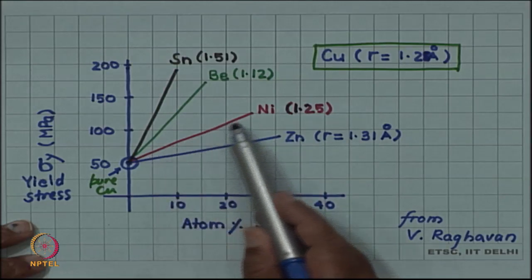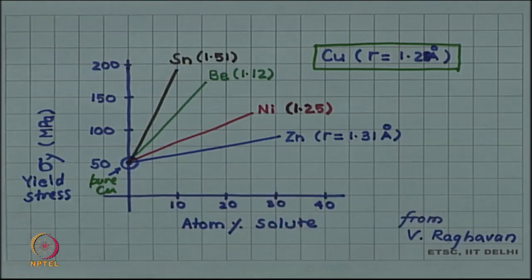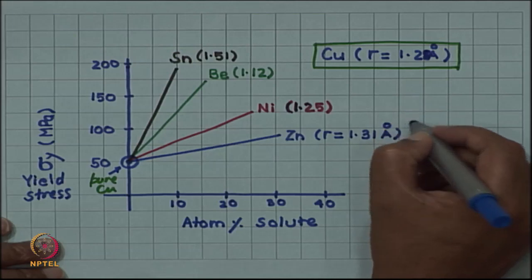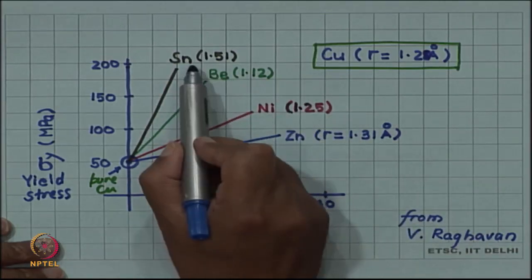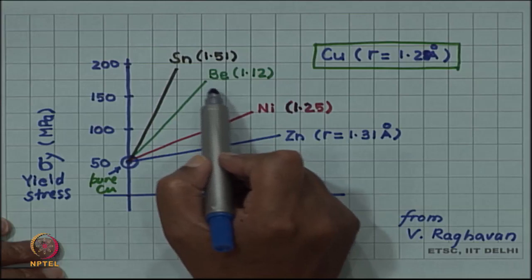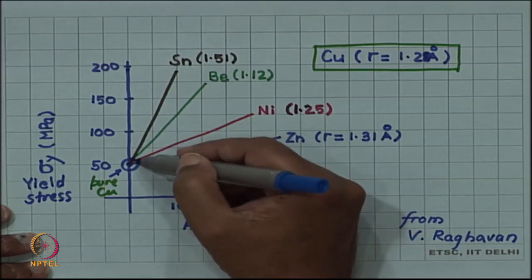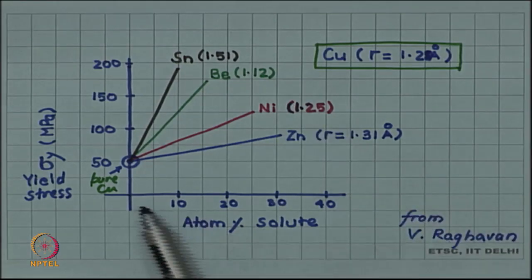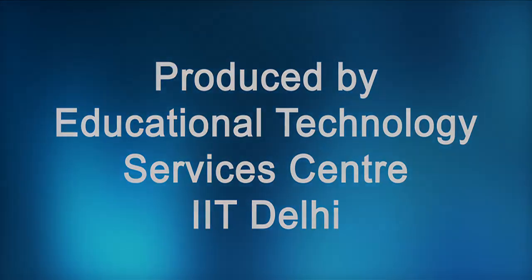With increasing amount of solute, strength increases for whatever solute is added. However, if the radius difference is small, the effect is small and the slope is small. Whereas if the radius difference is large, as in the case of tin and beryllium relative to copper, then for a small amount of solute the hardening is much more. You can see how solid solution hardening depends both on the size difference as well as the amount of solute.